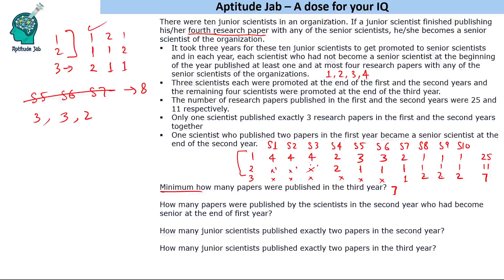There is a question about how many papers were published by the scientists in year two who had become senior at the end of year one. The total in year two is 11, but 8 papers come from the junior scientists still being promoted. So 3 papers were published by those three scientists who had already become senior scientists after year one. We don't know who published how many individually — some may have published all three, or they may have published one each — only that three total were published.